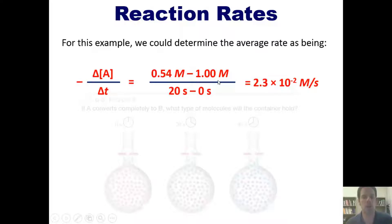which was the concentration of A at 0 seconds. And we would divide all of that by 20 seconds minus 0 seconds. Hopefully, that makes sense. You throw that all into your calculator, you get an answer of 2.3 times 10 to the negative 2 molars per second.